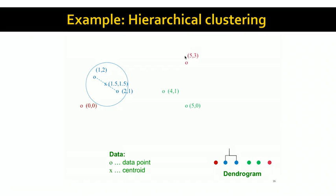Now we have five clusters. We started out with each data point as its own cluster, and we've combined two into a single cluster. We need to find the nearest pair of clusters. As it turns out, the nearest pair is the pair of points (4,1) and (5,0). Once we've created this cluster, we represent it by its centroid. The centroid is the point (4.5, 0.5), where 4.5 is obtained by averaging the x coordinates, and 0.5 by averaging the y coordinates, which are 1 and 0. So now we have four clusters. As we go along merging clusters, we create an artifact called a dendrogram, which shows how we merge data points and clusters. In the first step, we merged the two blue data points, and in the second step, we merged the two green data points.